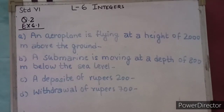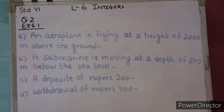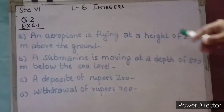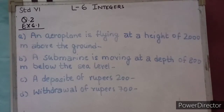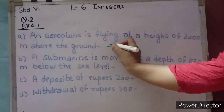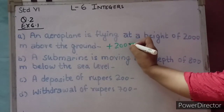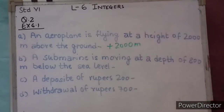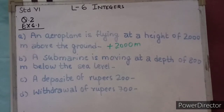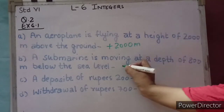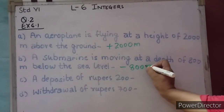Question number 2: Represent the following numbers as integers with appropriate signs. An aeroplane is flying at a height of 2000 metre above the ground — above the ground means positive, so it is plus 2000 metre. A submarine is moving at a depth of 800 metre below the sea level — below means we consider sea level as 0, and below 0 means negative, so it is minus 800 metre.